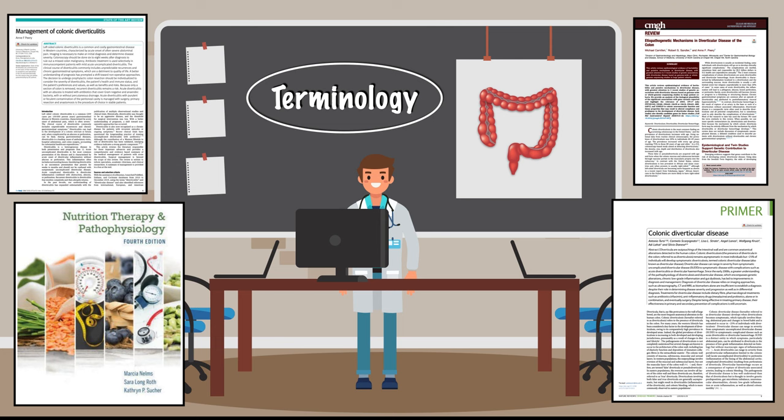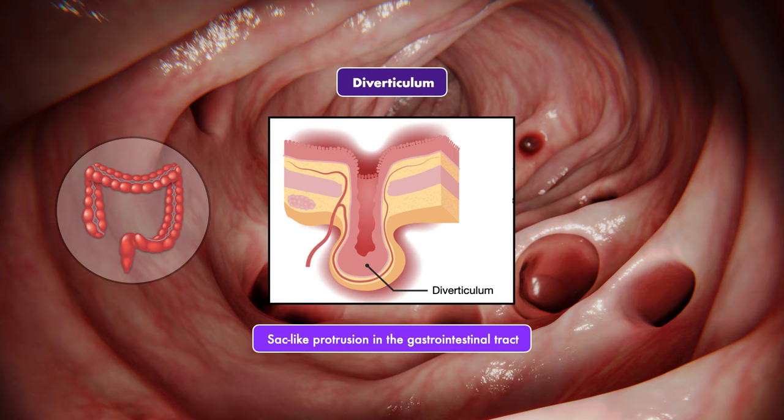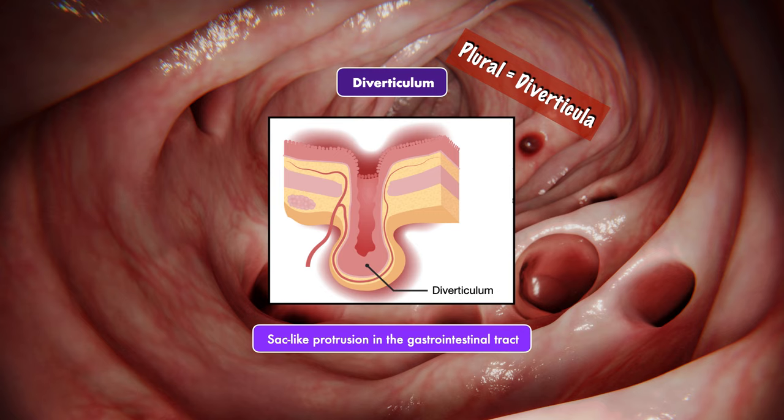A diverticulum is a sac-like protrusion in the gastrointestinal tract. It can technically appear anywhere along the tract, but the most common location is in the large intestine. The plural form of diverticulum is diverticula — when we're talking about just one, it's diverticulum, and when we're talking about more than one, it's diverticula.